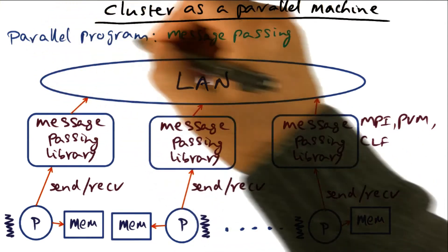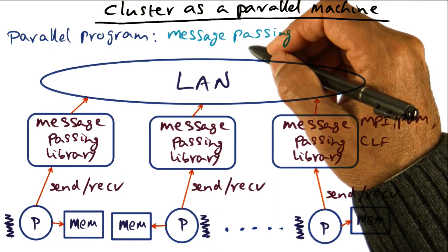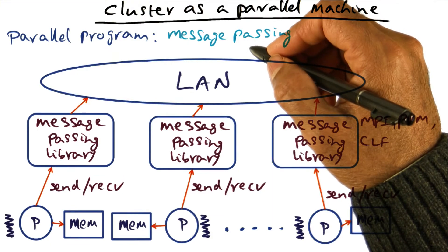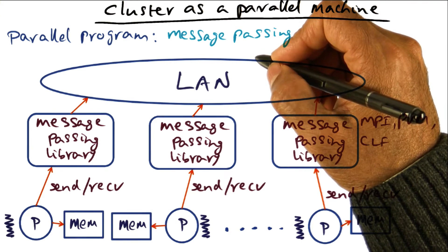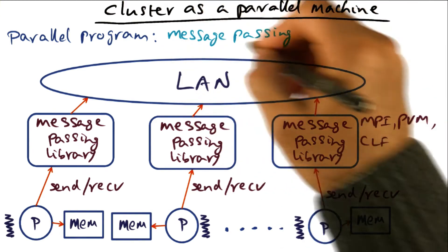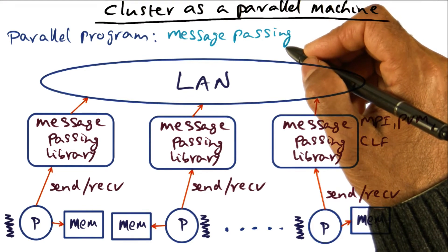And there are two styles of writing explicitly parallel programs and correspondingly, system support for those two styles of explicitly parallel programs. One is called message passing style of explicitly parallel program.